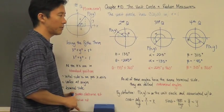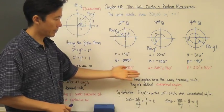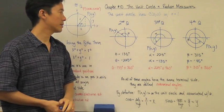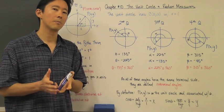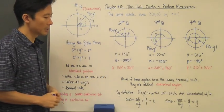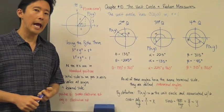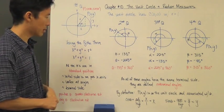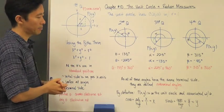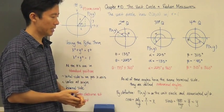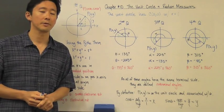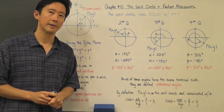The key thing to remember is that co-terminal angles, even though represented differently, have the same cosine and sine values because they refer to the same point on the unit circle. We'll go ahead and take a look at some examples in class covering the unit circle, angles in standard position, co-terminal angles, and how sine and cosine are all related. Good luck, see you in class.